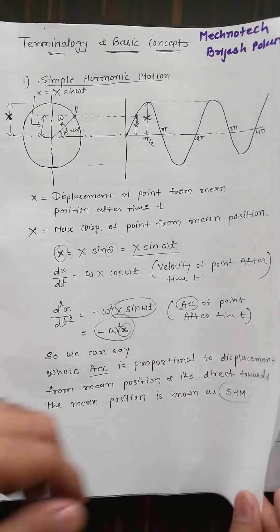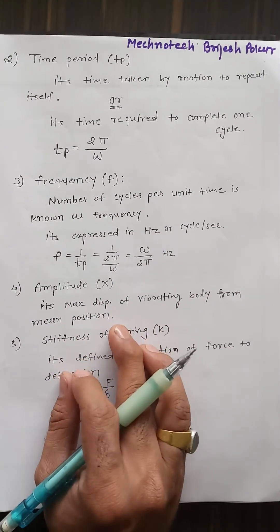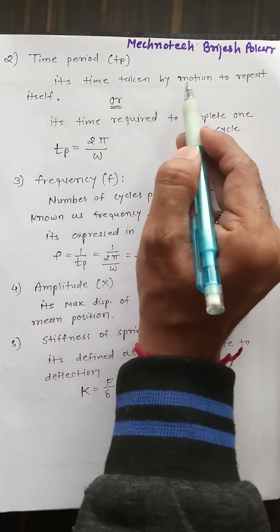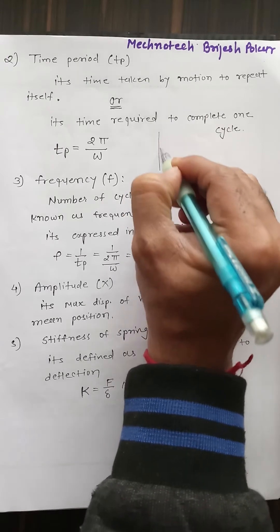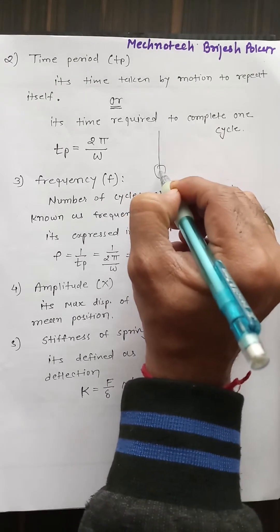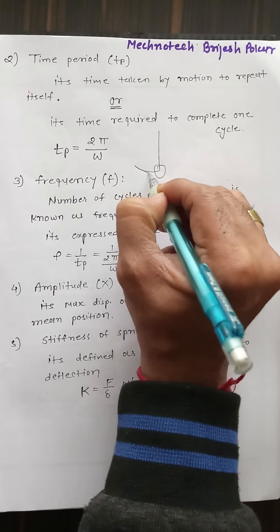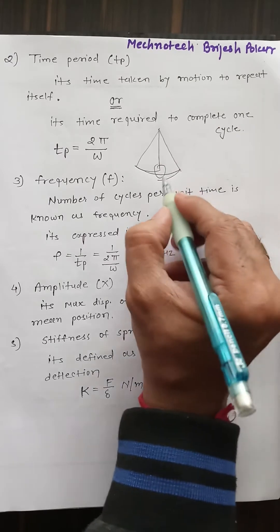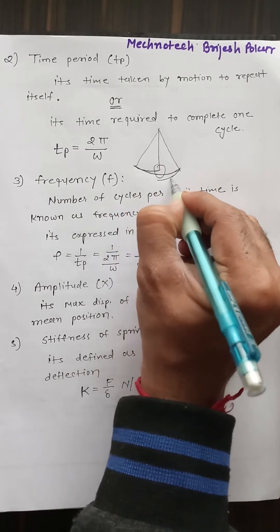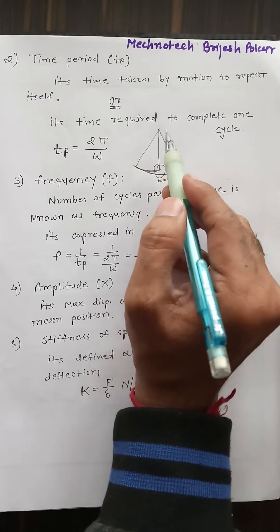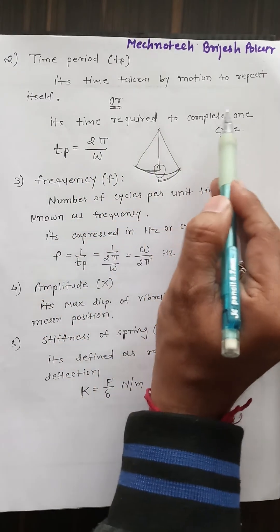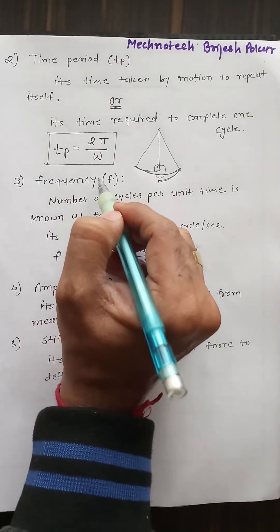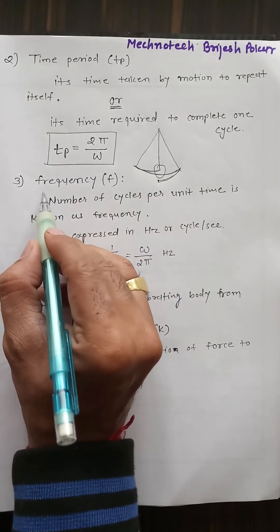Next is time period Tp. The time period is the time taken by the motion to repeat itself. For example, consider a pendulum — when it completes one full cycle of oscillation, that time is the time period. It is the time required to complete one cycle, and the equation is Tp = 2π/ω.